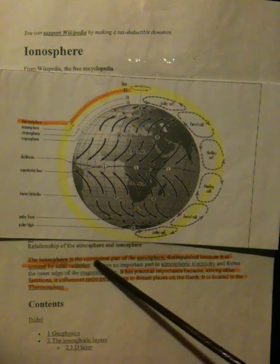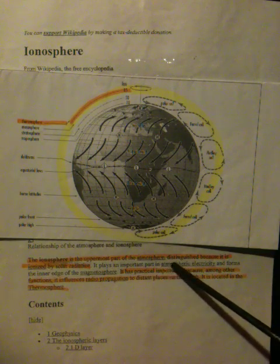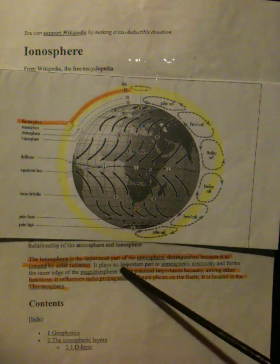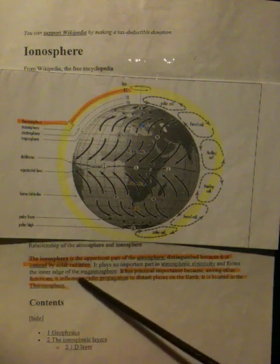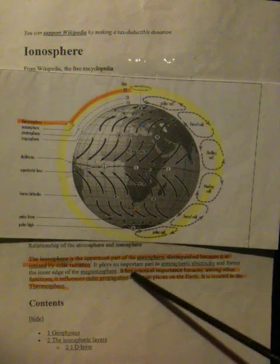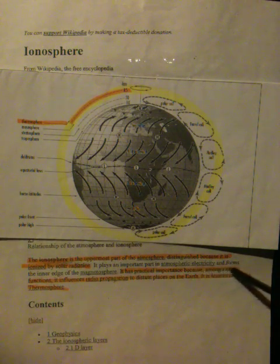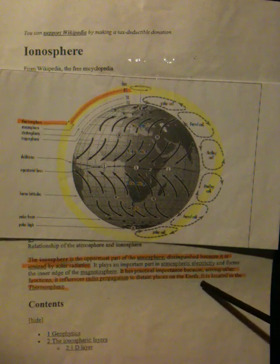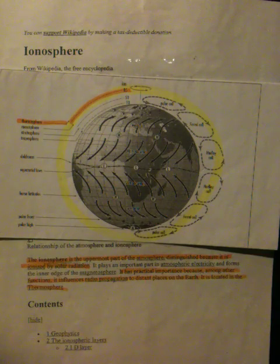The ionosphere is the uppermost part of the atmosphere distinguished because it is ionized by solar radiation. It plays an important part in atmospheric electricity and forms the inner edge of the magnetosphere. It has practical importance because, among other functions, it influences radio propagation to distant places on the Earth. It is located in the thermosphere.